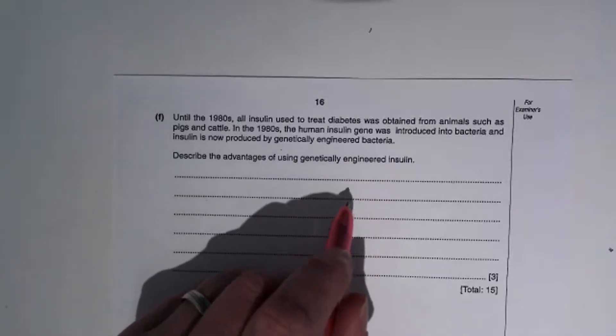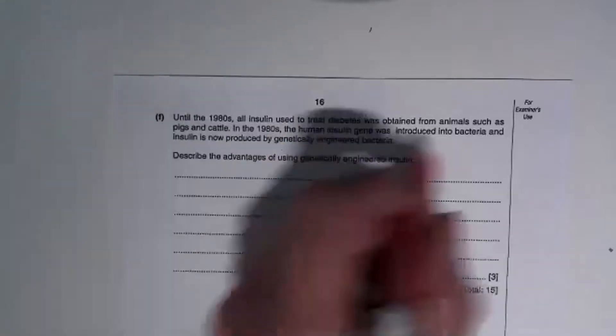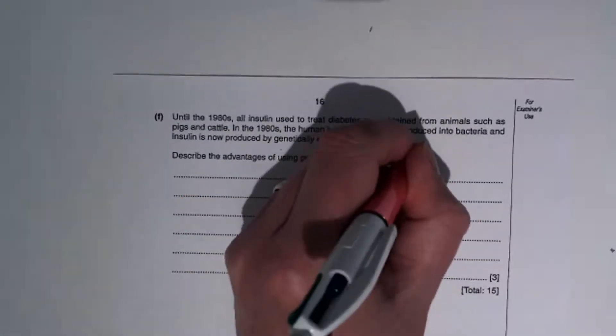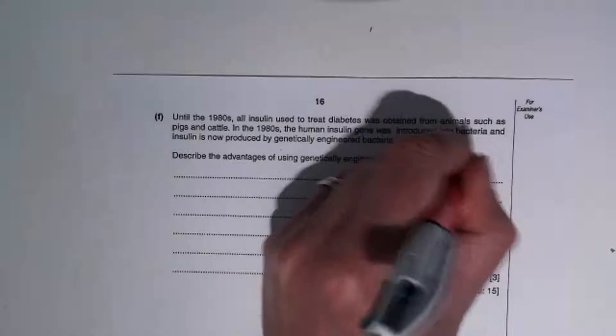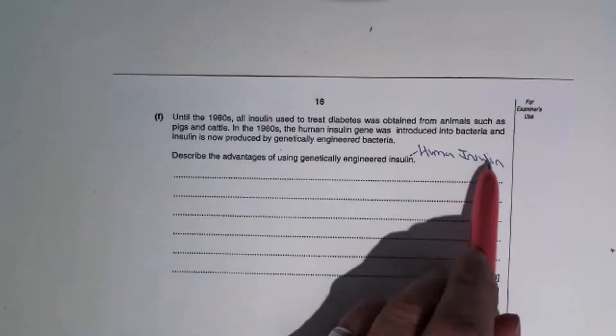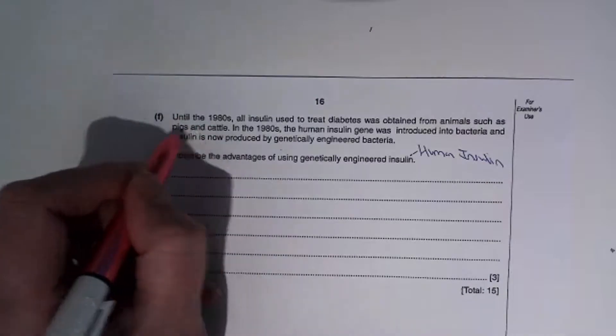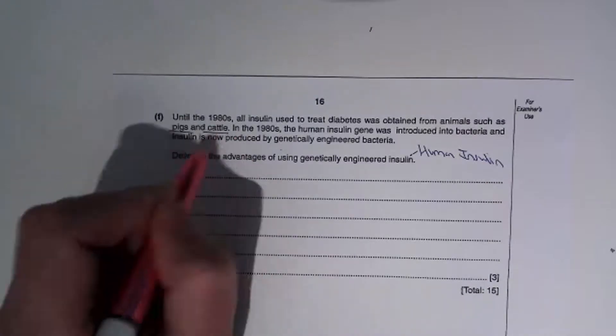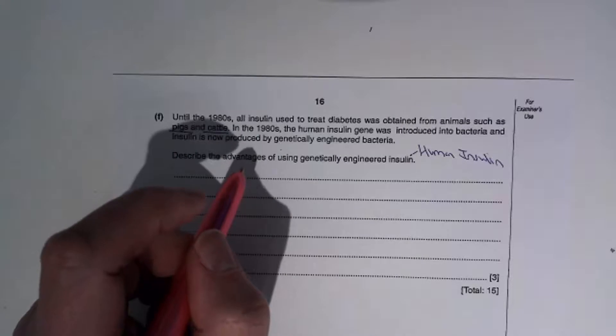This insulin will be human insulin, and we'll talk about the advantages of using human insulin over insulin that's taken from pigs and cattle after slaughter.